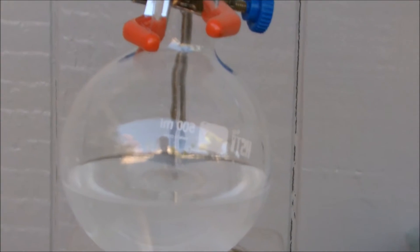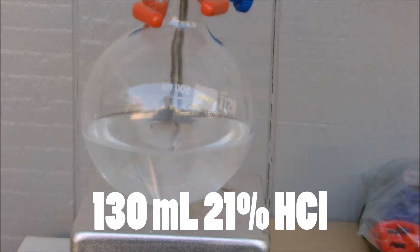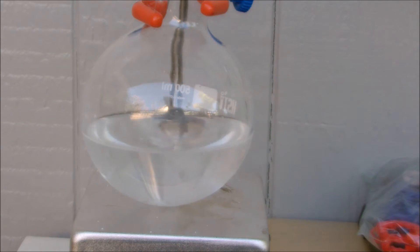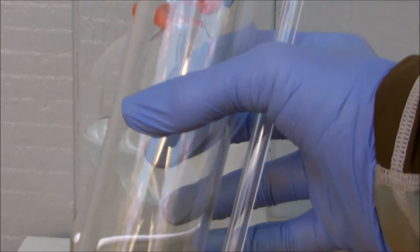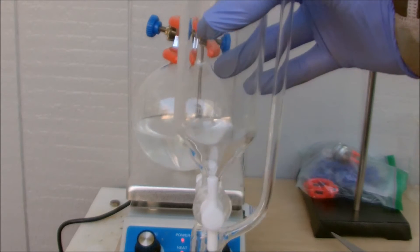Now we're going to add 130 milliliters of 21% hydrochloric acid. You can use any percentage you want. Mine just happens to be this, so you probably will need less if you use the 35%. I'm going to put that into this 250 milliliter pressure equalizing addition funnel. Let's measure that out now.